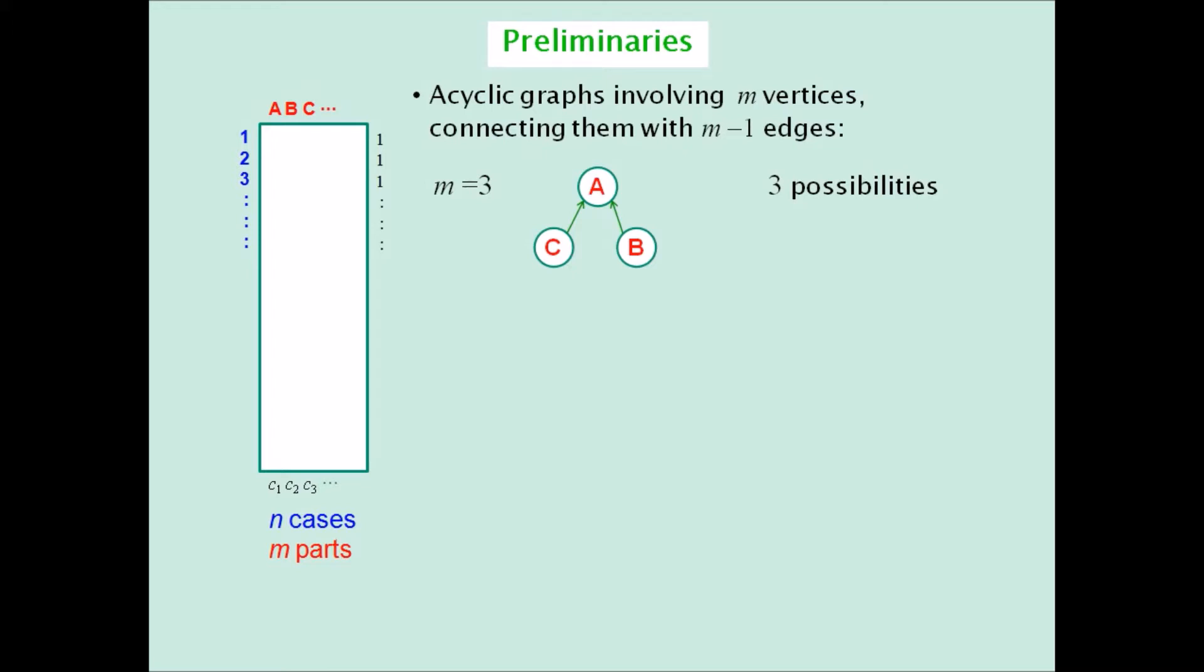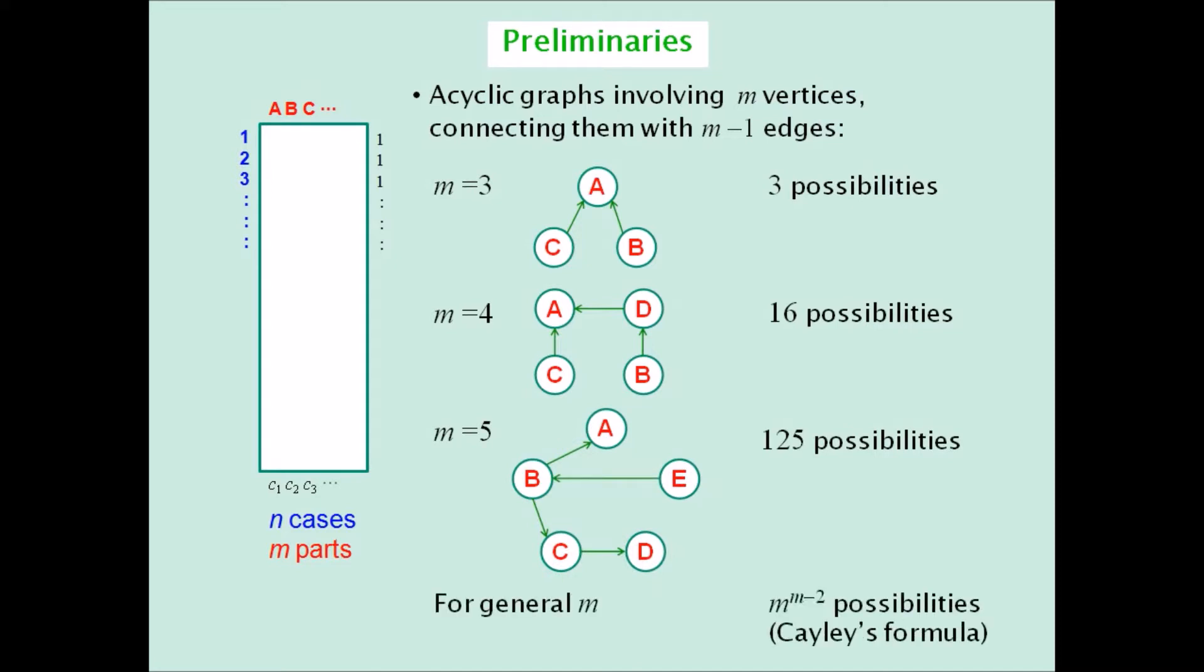For four parts, there are 16 ways of defining such a graph with three ratios. For five parts, there are 125 possibilities. And in general, for M parts, there are M to the power M-2 possibilities. This is known as Cayley's formula in combinatorics.